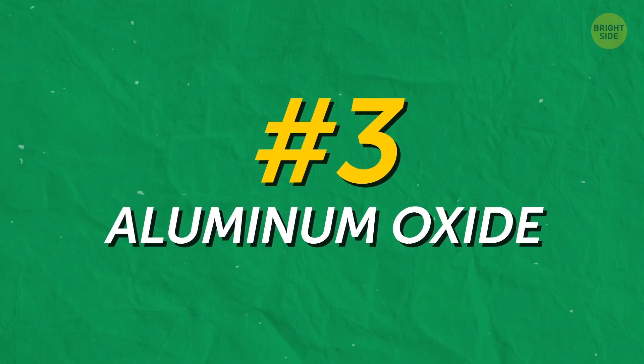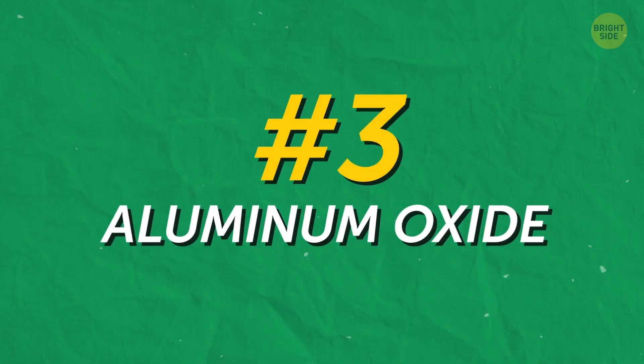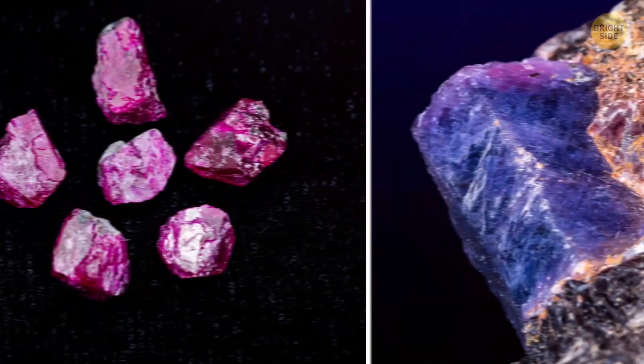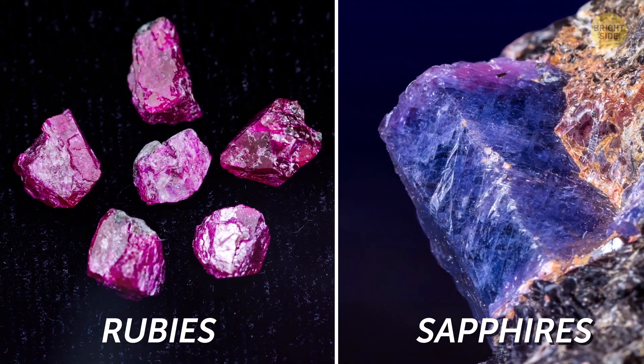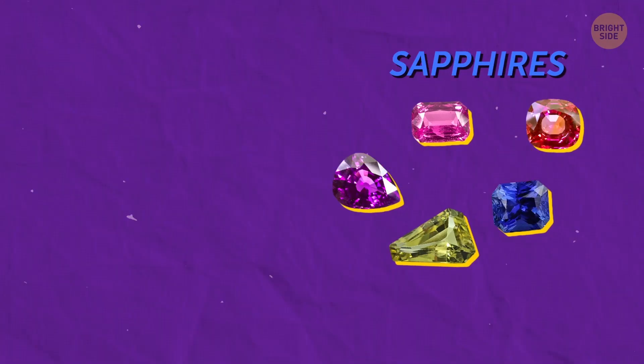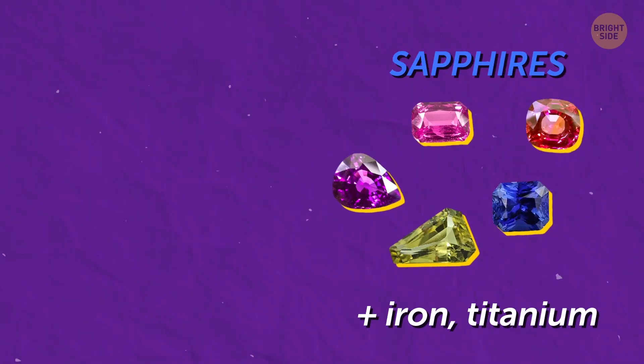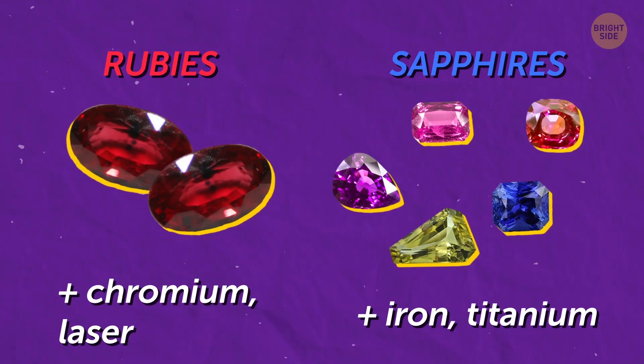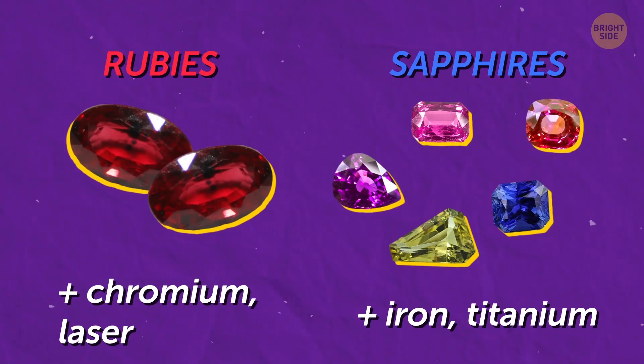The third most plentiful element is aluminum oxide. The most natural form of this is corundum. Beautiful gems like sapphires and rubies are forms of corundum. But they owe their unique colors to trace impurities. For example, sapphires get their shades from iron and titanium, while rubies get their burgundy color from the presence of chromium, and with the helping hand of lasers.